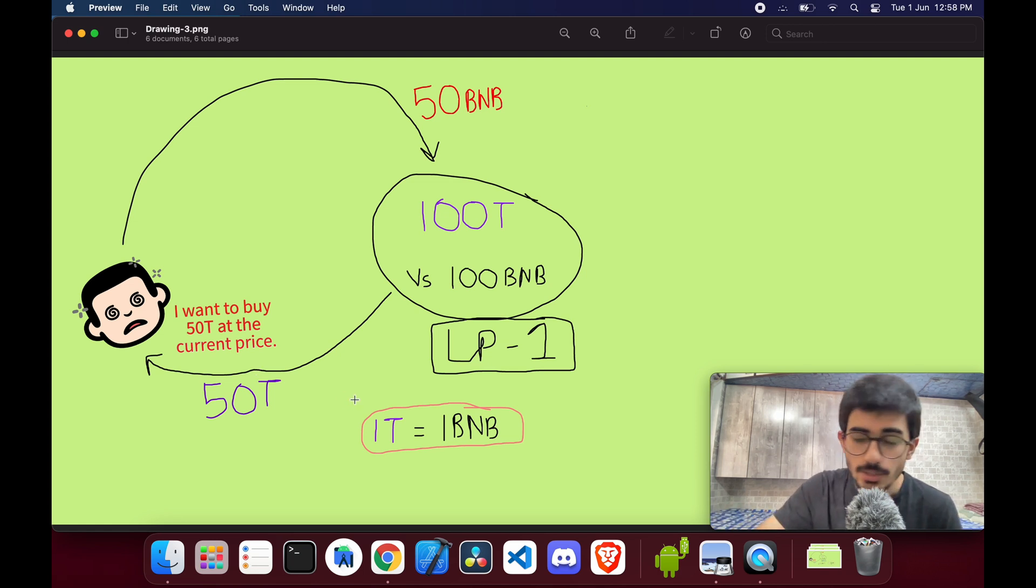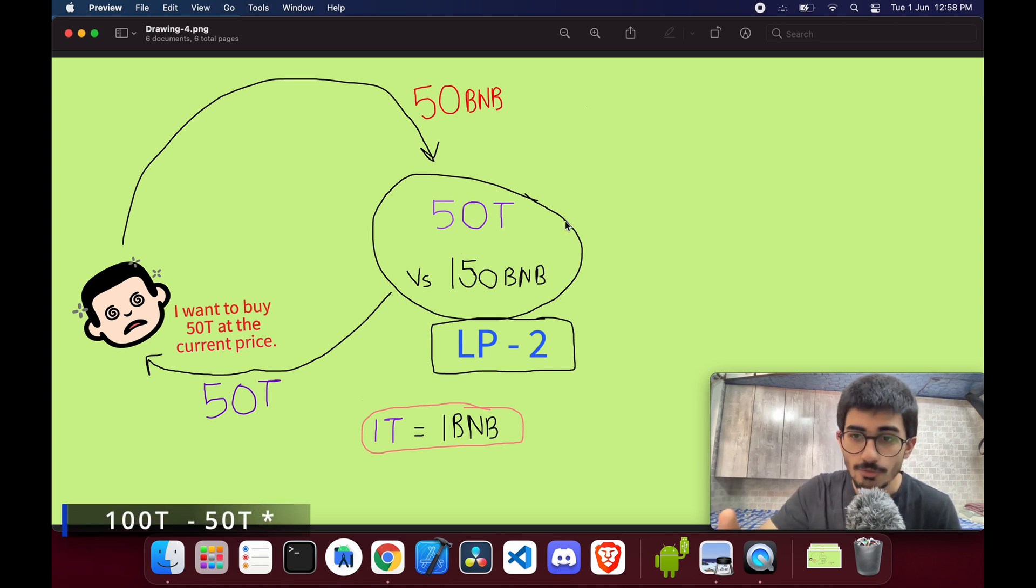So I've cleared that out. Now let's jump back to the example - he puts in 50 BNBs, he gets 50 tokens out. Now this liquidity pool changes, right? Because 50 tokens were taken out and 50 BNBs were added. So it changes to 50 tokens because previously it was 100 tokens, and it goes down to 50 tokens. And 150 BNBs because 50 were added. So this is a new liquidity pool.